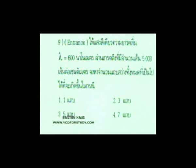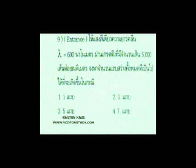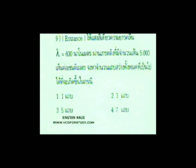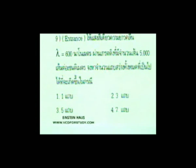โจทย์เกรติ้งนะครับ ให้แสงสีเดียวความยาวคลื่น Lambda เท่ากับ 600 นาโนเมตร ผ่านเกรติ้งที่มีจำนวนเส้น 5,000 เส้นต่อเซนติเมตร จงหาจำนวนแถบสว่างที่เป็นไปได้ทั้งหมดที่เกิดขึ้นในกรณีนี้นะครับ